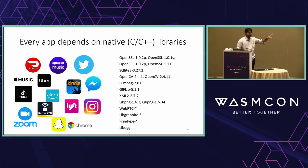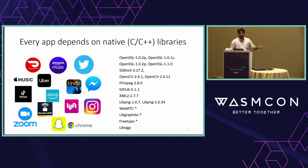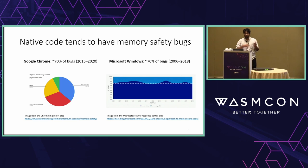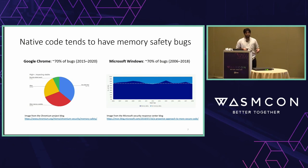Almost every application we use relies on a ton of C and C++ code, which is fast and great. But native code has a ton of memory safety issues. Seventy percent of bugs in large applications like browsers and operating systems tend to be memory safety bugs. This has been consistent across studies conducted over five, ten, and fifteen years — it's more or less always the same statistic.